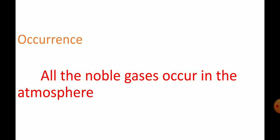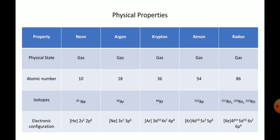Now we can see the physical properties. There are certain properties to consider. First, atomic radius — there is a general trend observed from top to bottom. The elements that constitute group 18 are helium, neon, argon, krypton, xenon, and radon. Looking at atomic radius, helium possesses the lower atomic radius, whereas radon possesses the larger atomic radius. When we look at melting and boiling points, helium possesses the lower melting and boiling points, whereas radon possesses the higher melting and boiling points.